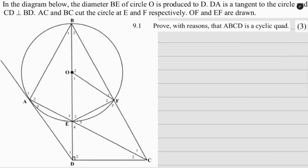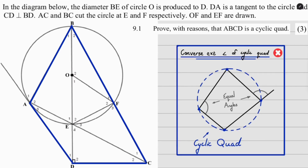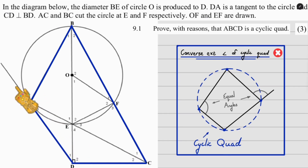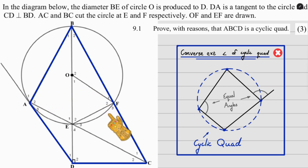I'm going to highlight that cyclic quad and run through the three different ways we could possibly prove a cyclic quad. The first method is if you prove that an interior angle equals the opposite exterior angle — so proving the whole of C equals A1. Since C is outside the circle, that would be a lot of hard work and might even be impossible, so I'd prefer to look at the other methods.